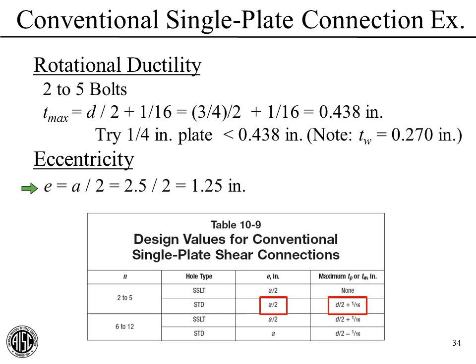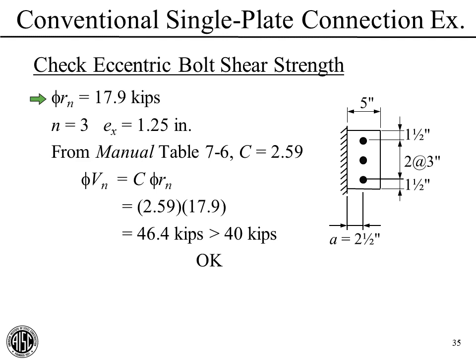Table 10-9 is our go-to resource for the conventional single-plate procedure. Let's check eccentric bolt shear strength. We have the strength of one bolt at 17.9 kips, three bolts, and an eccentricity of 1.25 inches. Going to Table 7-6 to pull out the C coefficient—the effective number of bolts—our connection strength is the strength of one bolt times C. Plugging in those numbers, we get 46.4 kips, which exceeds 40 kips. So this limit state is okay.